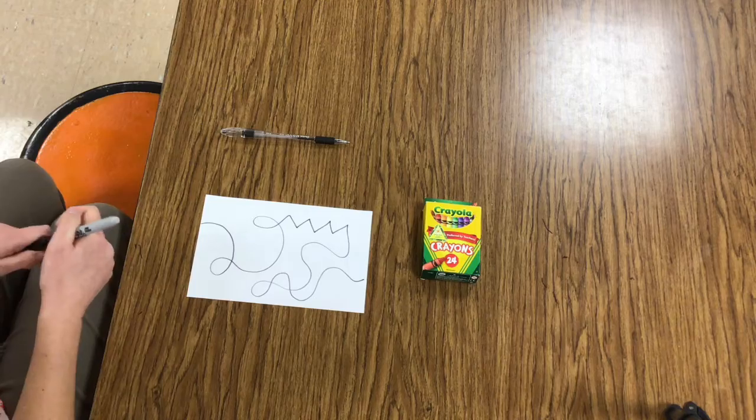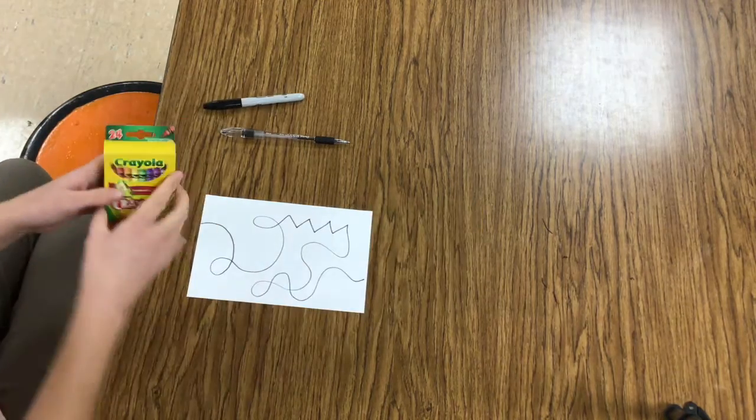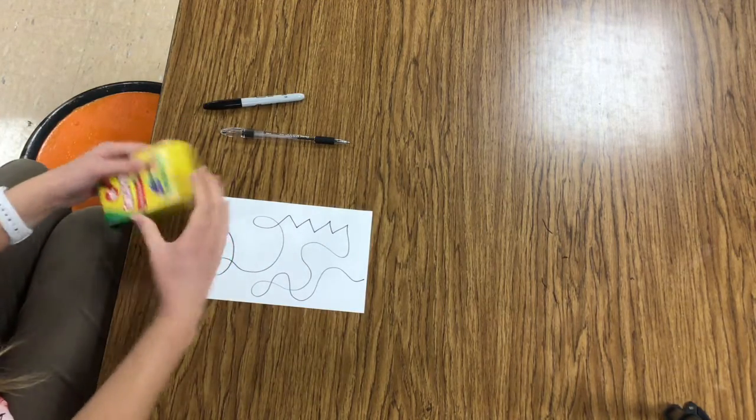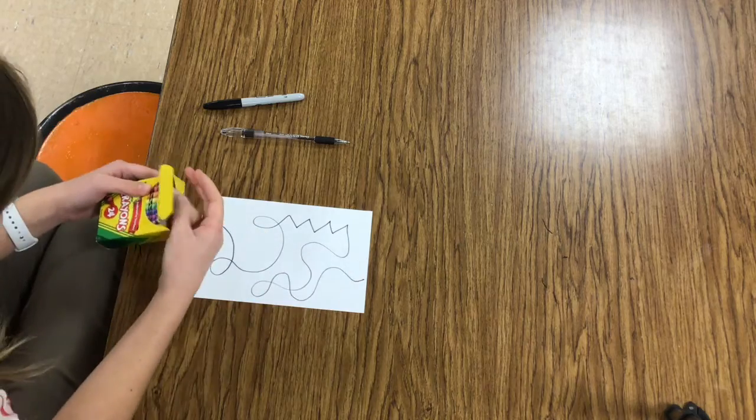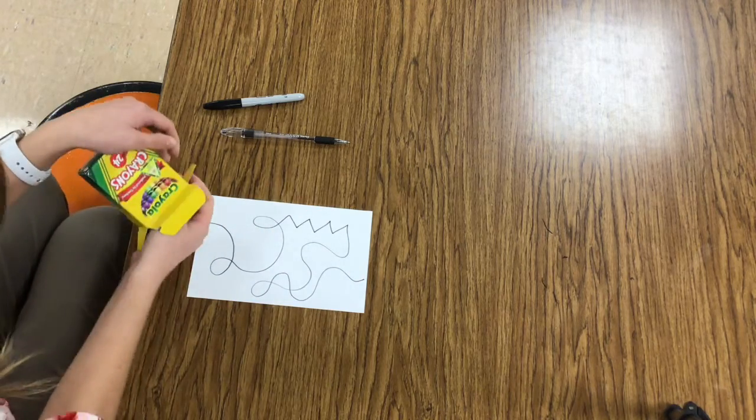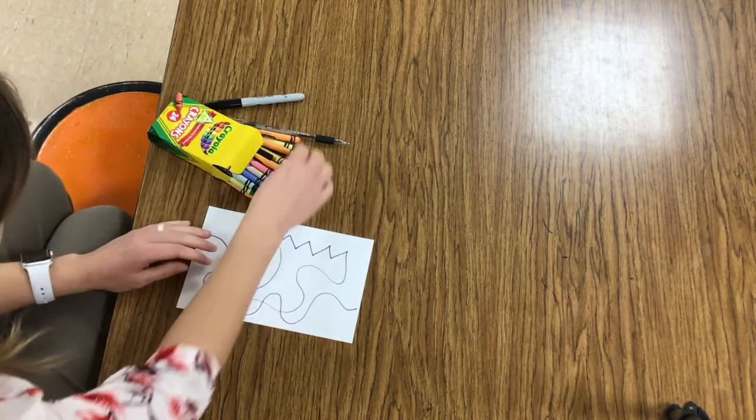The next thing that I can do if I have these things at home is add some color. Color is another one of our elements of art. You could use crayons, you could use markers, you could use colored pencils.